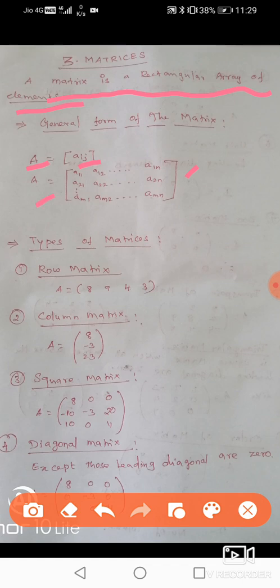A = [a11, a12, ... a1n; a21, a22, ... a2n; ... am1, am2, ... amn], where M equals number of rows and N equals number of columns.